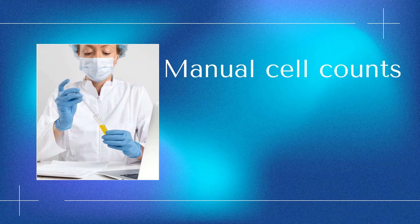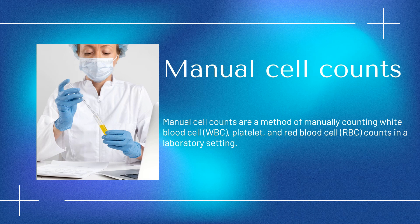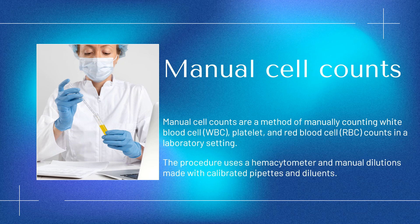Manual cell counts are a method of manually counting white blood cells (WBCs), platelets, and red blood cells (RBCs) in a laboratory setting. This method may be necessary when automated instruments are not available or cannot be used, such as in remote labs in developing countries, during a disaster situation, or when counts exceed the linearity of an instrument. The procedure uses a hemocytometer and manual dilutions made with calibrated pipettes and diluents.